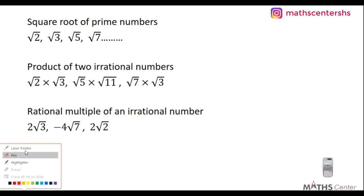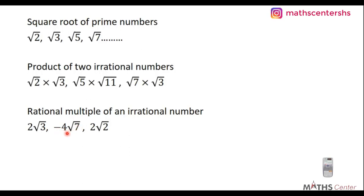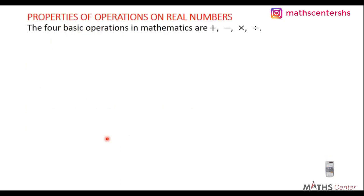Similarly, negative 4√7 (negative 4 times square root of 7) and 2√2 are also irrational numbers because they are rational multiples of irrational numbers. We've now seen examples of both rational and irrational numbers.